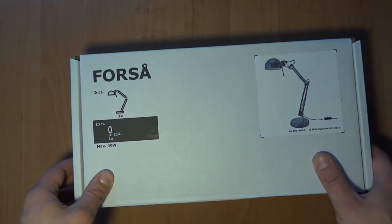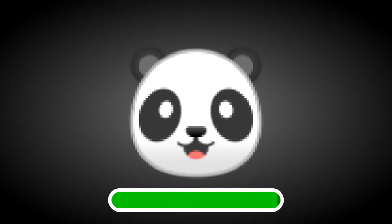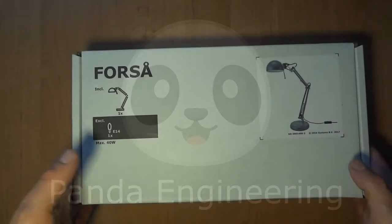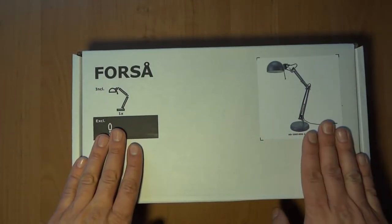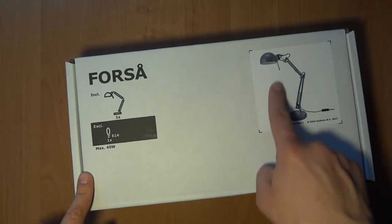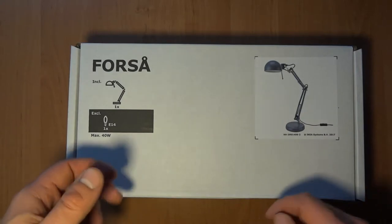Guess what day it is today? It's a new lamp day. Here I have the Forsa lamp, the second cheapest desk lamp from Ikea. What I want to do is make a camera stand because currently I'm working with another setup that's kind of weird. I have a camera mounted to a lamp using another camera stand, so it's kind of hard to work around.